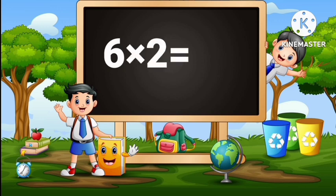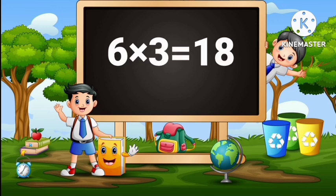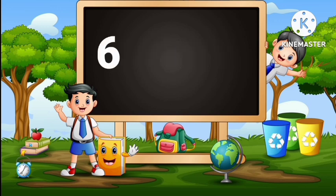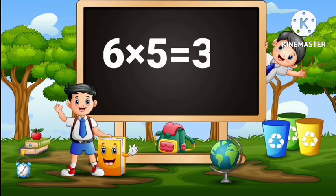Six twos are twelve. Six threes are eighteen. Six fours are twenty-four. Six fives are thirty.